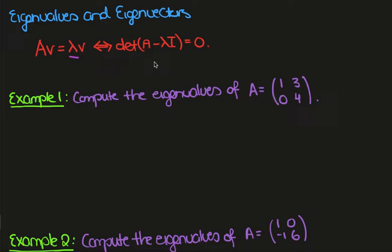The formula is given by the determinant of A minus lambda times the identity being equal to 0. So let's first compute A minus lambda I.